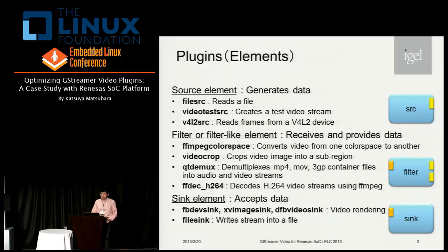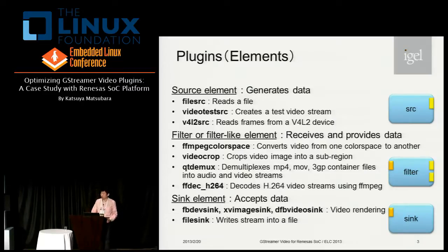A source element is used to generate data for output. An example of a source element is file source to read a file. Video test source is used to create a test video stream, and V4L2 source can be used to read frames from a Video4Linux device. The filter or filter-like element can receive and provide data. The FFMPEG color space plug-in can convert video from one color space to another, video crop can crop a video image into a sub-region, and QtDemux works as a demuxer for MP4, MOV, and 3GP container files.